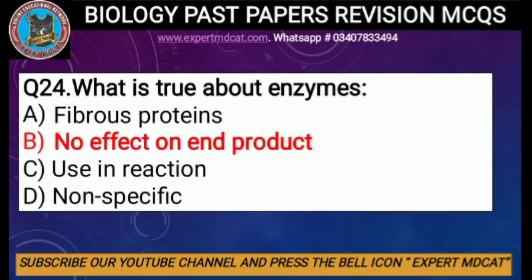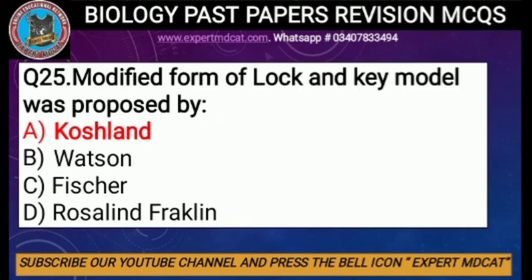Question number twenty-four: what is true about enzymes? Options are — A) fibrous proteins, B) no effect on end product, C) use injection, D) non-specific. Enzymes are highly specific globular proteins, not fibrous proteins. They have no effect on the end product of a reaction. The correct option is B, no effect on end product.